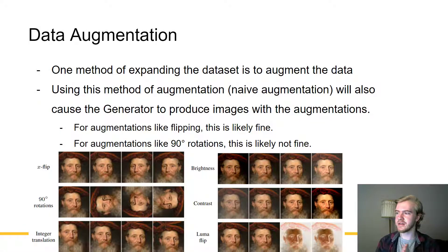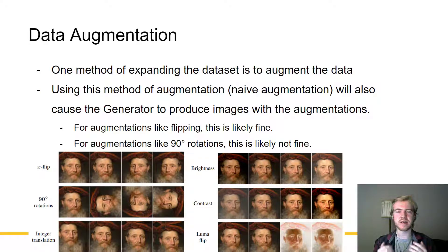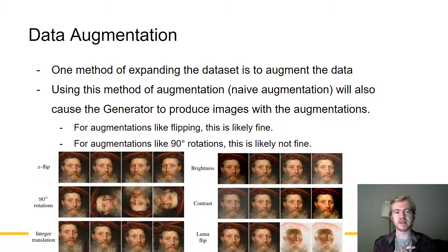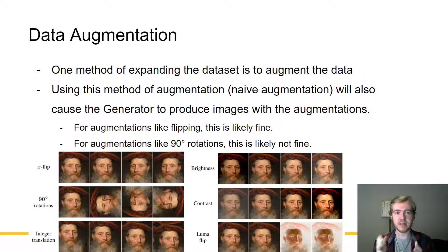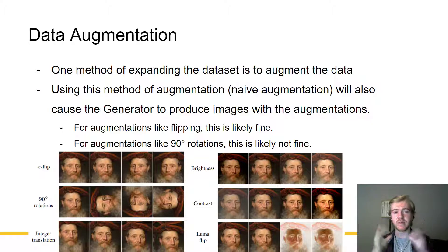Using naive augmentation will also cause the generator to produce images with the augmentations. This is fine for things like flipping, where you can double the size of the dataset without too much hampering of performance. But for some other augmentations, like rotating by 90 degrees, this is likely not fine — we don't want the generator creating sideways faces. We only want it to create faces of the right orientation.